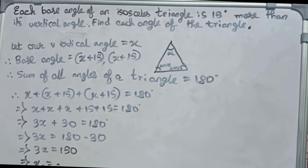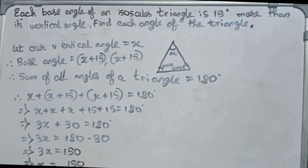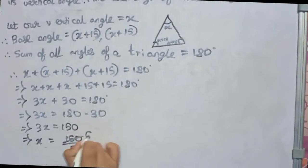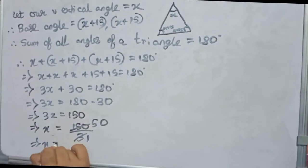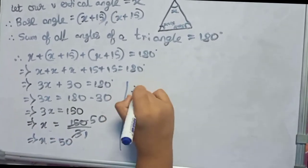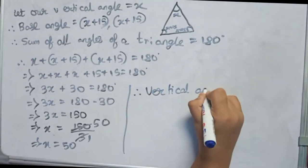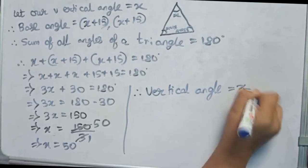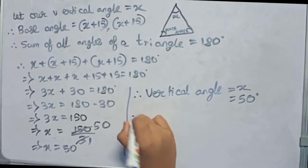Or x equals to 150 by 3, so it becomes x equals to 50. So therefore, our vertical angle that we have taken as x equals to 50, so it remains as 50 degrees only.